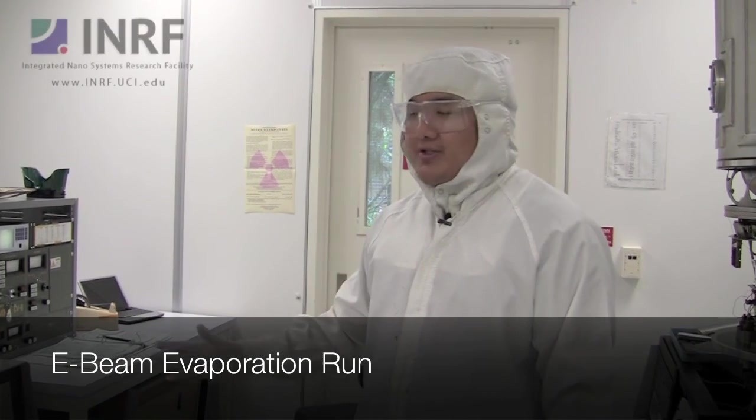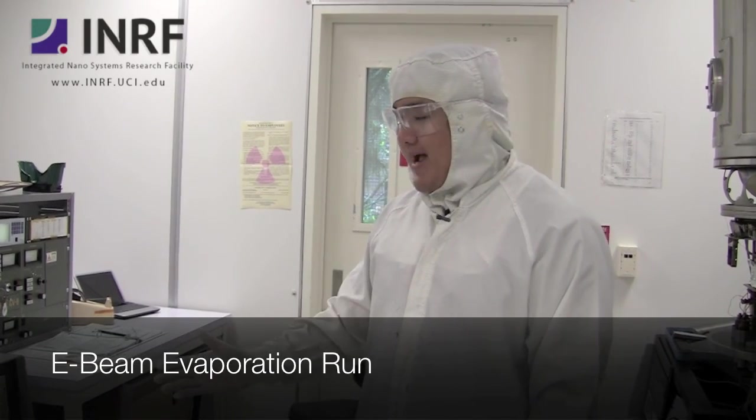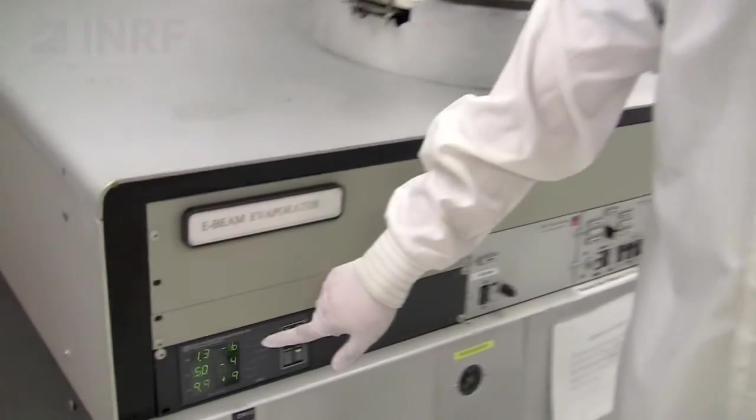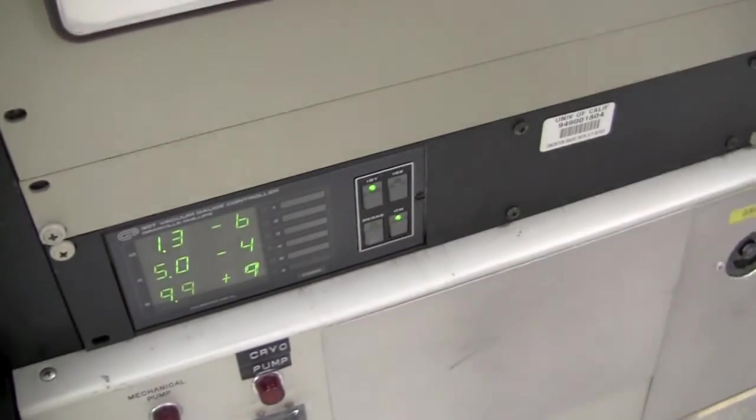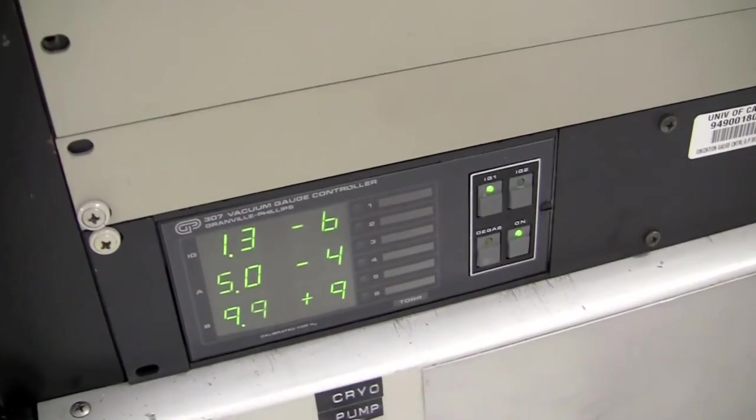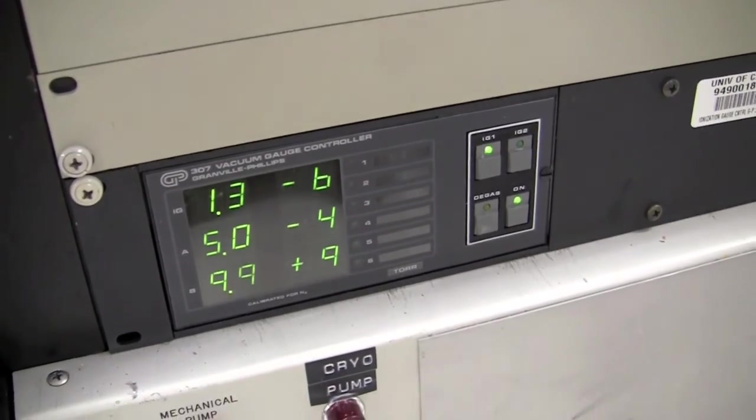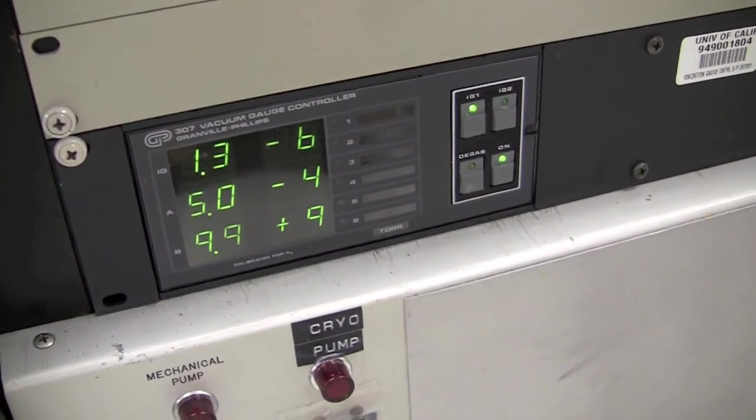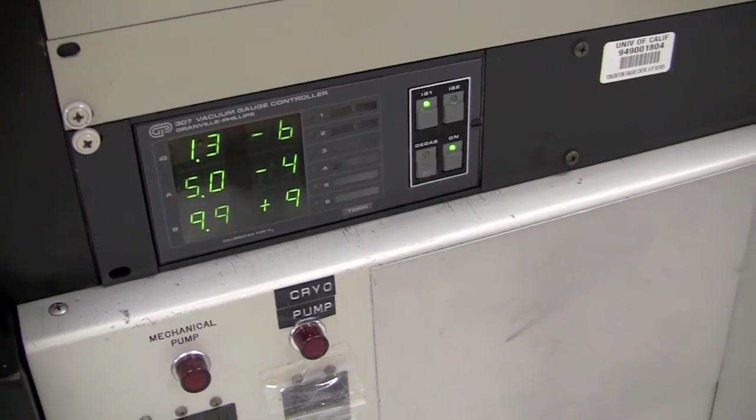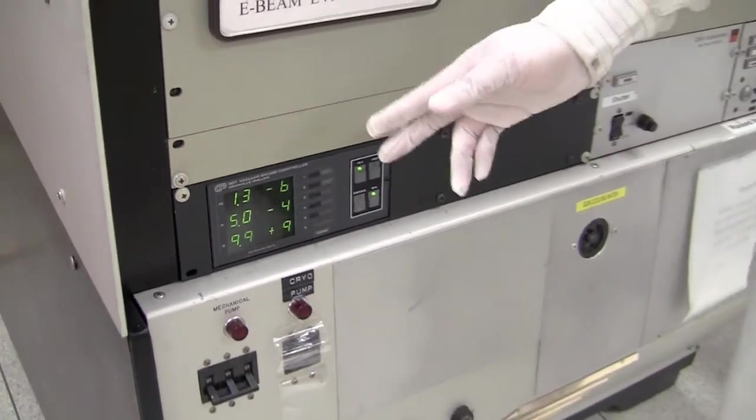After about two hours, once you've turned the system into HIVAC, you would come back to make sure the pressure is in the right range for deposition. So you look at the ion gauge, which is over here. As you can see, the ion gauge is reading 1.3 times 10 to the minus 6, which is in the correct range. You want the pressure to be in the mid 10 to the minus 6 range, so that's what it is.